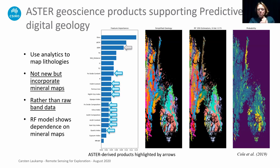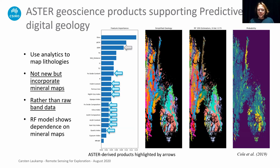David Cole and others from CSIRO, in collaboration with GSQ, used the ASTER mineral mapping products together with other remote sensing data and radiometrics to automatically map the geology of the eastern part of Mount Isa. Comparing the simplified published geology with the automatically derived geology — generated by combining all these different data layers — yields almost the same picture. The output also provides a probability map indicating confidence in the automated classification result.